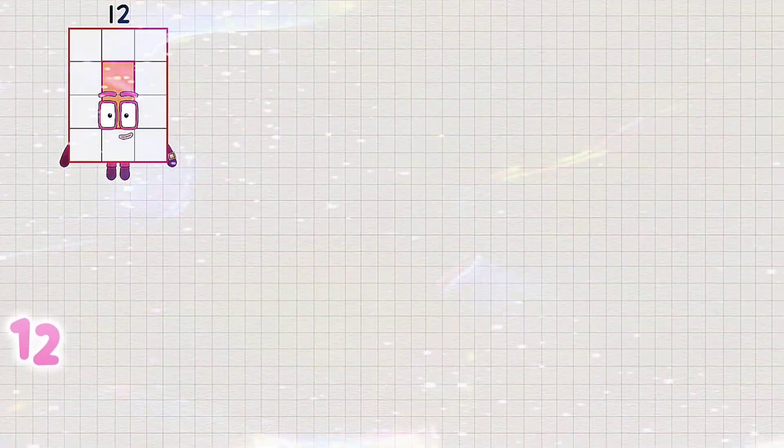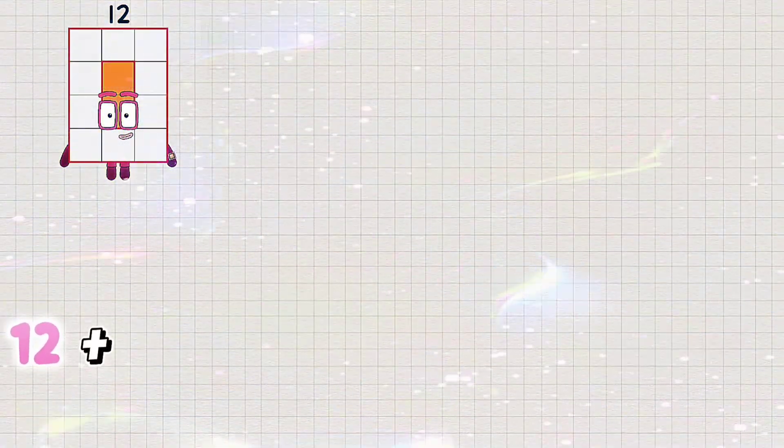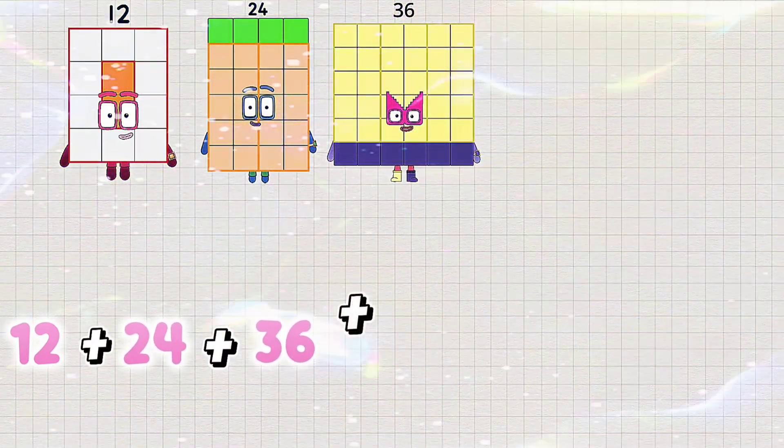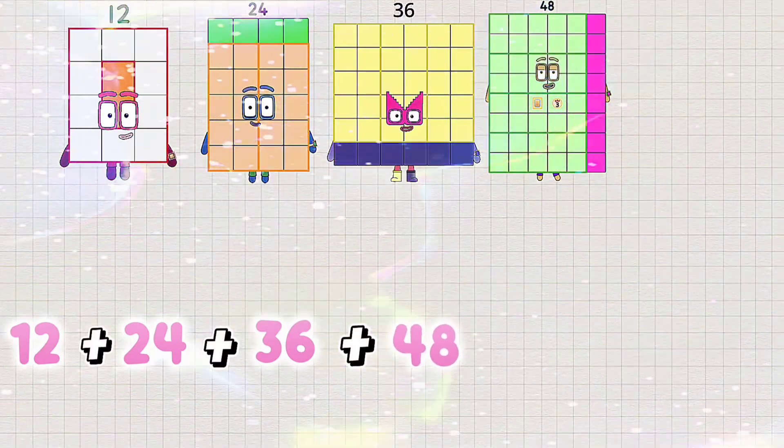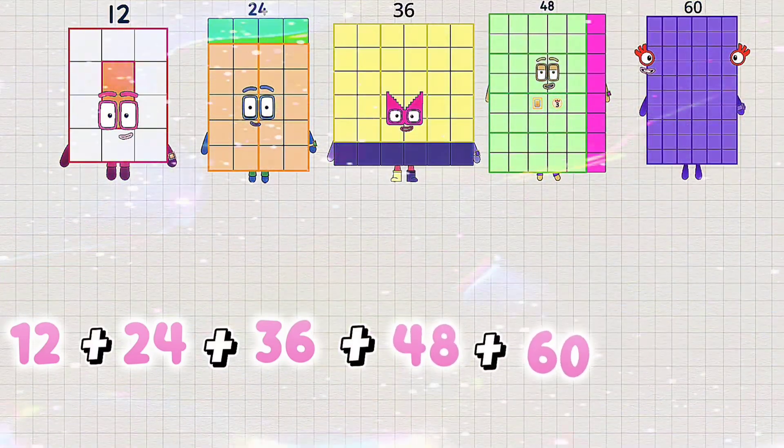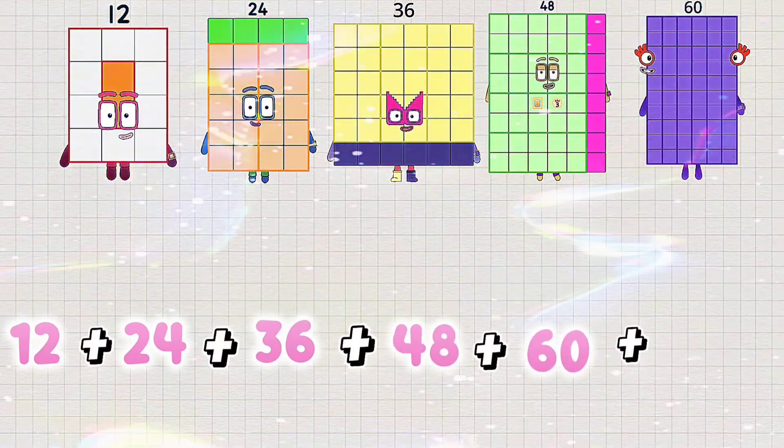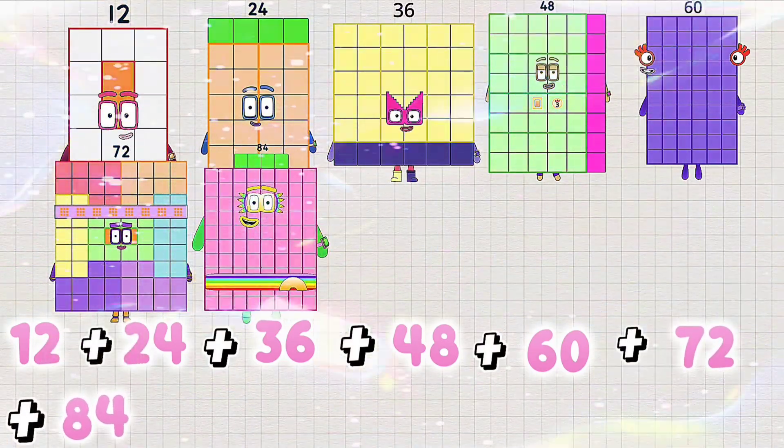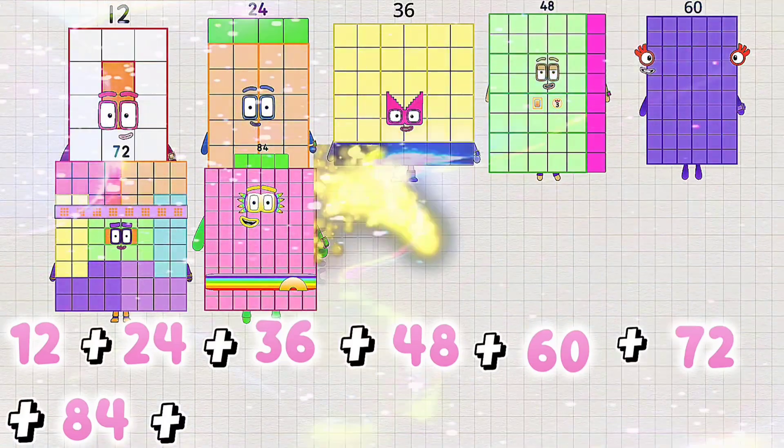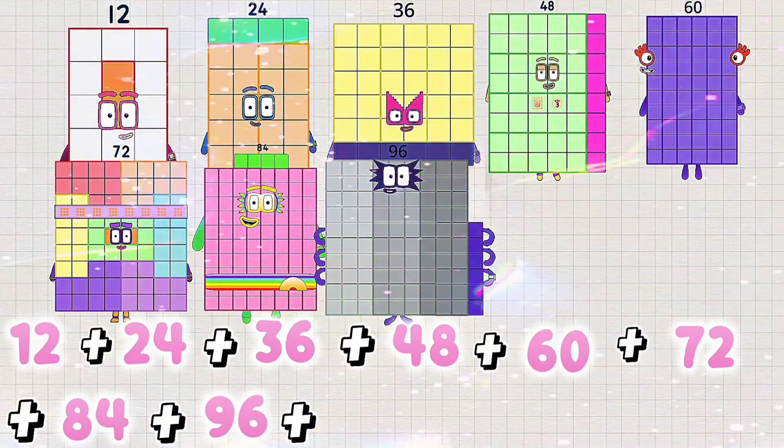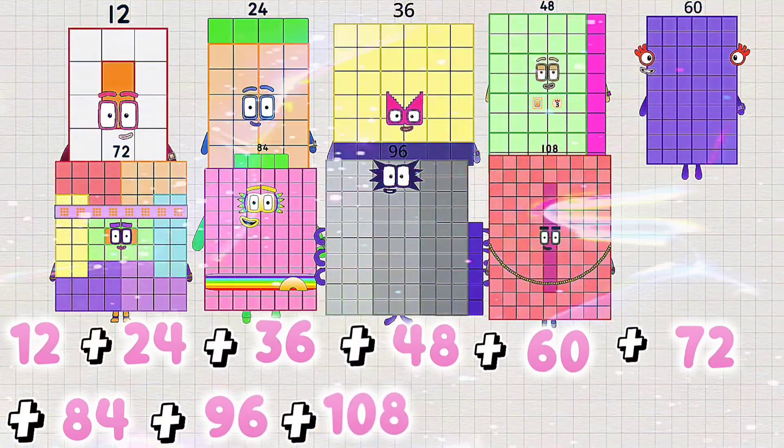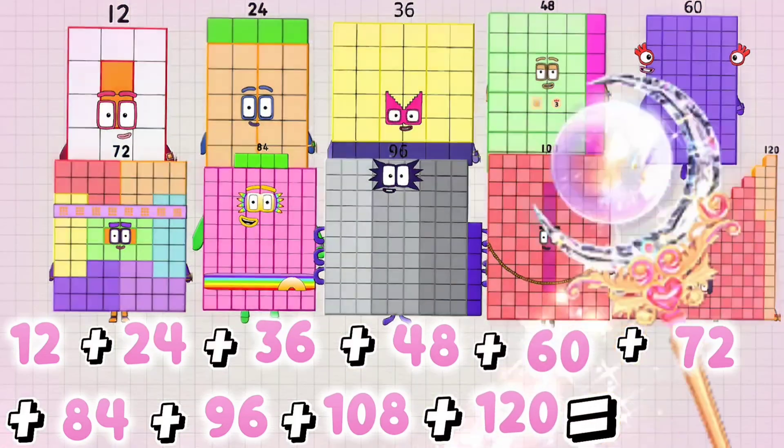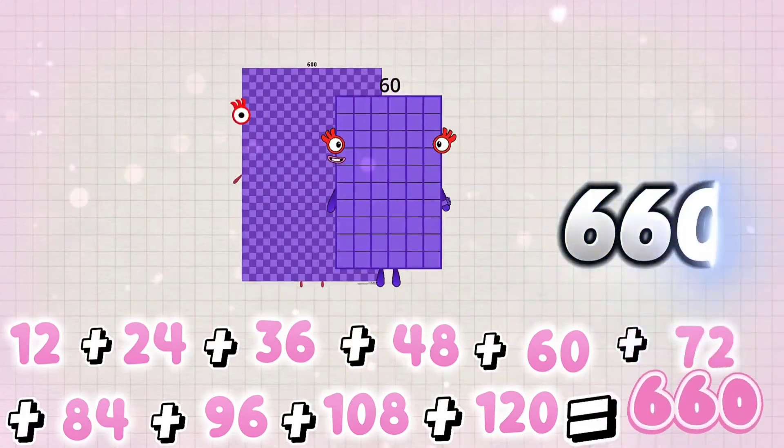12 plus 24 plus 36 plus 48 plus 60 plus 72 plus 84 plus 96 plus 108 plus 120 is equals to 660.